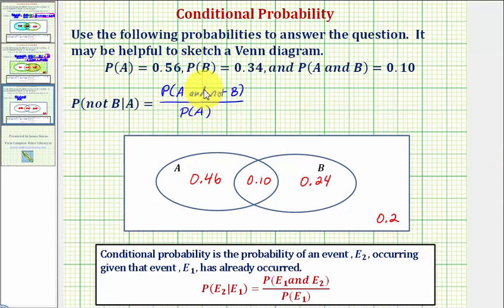And now before we find these two probabilities, let's highlight the region A and not B, as well as A. Let's start with the easy one. The region A is this region here.